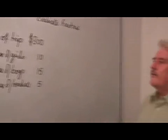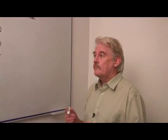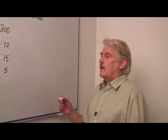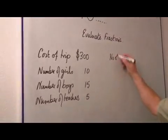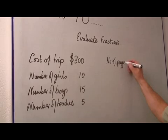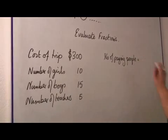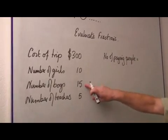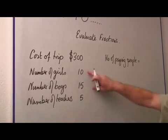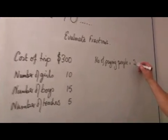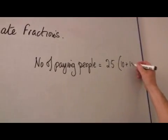So how do we work out how much of a proportion each is going to pay? So if you look at the number of paying people, this would be the number of girls plus the number of boys. Because the teachers aren't going to pay, they're working. So we've got 25. That is 10 plus 15.